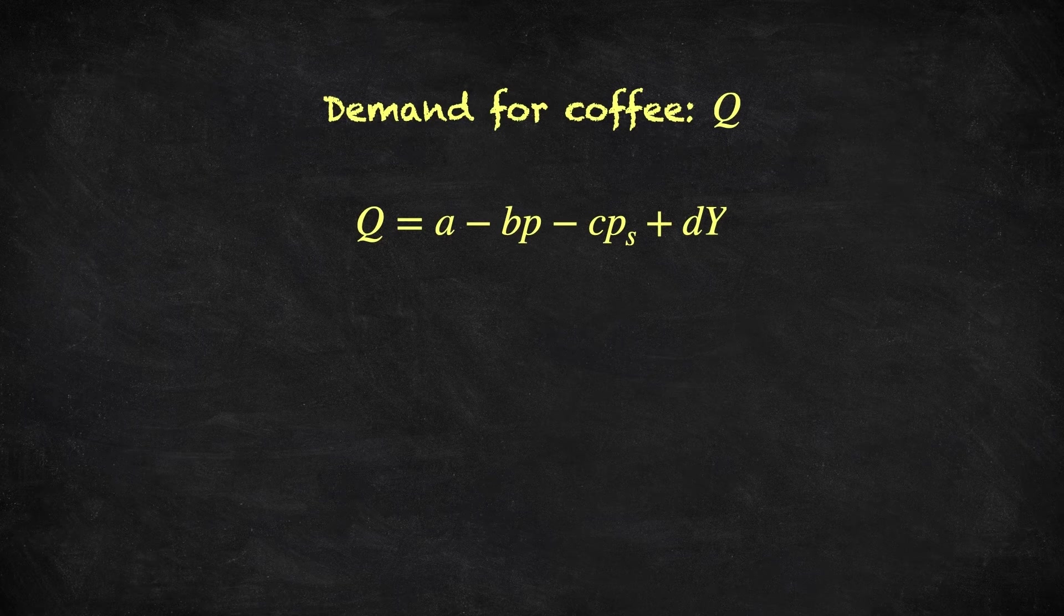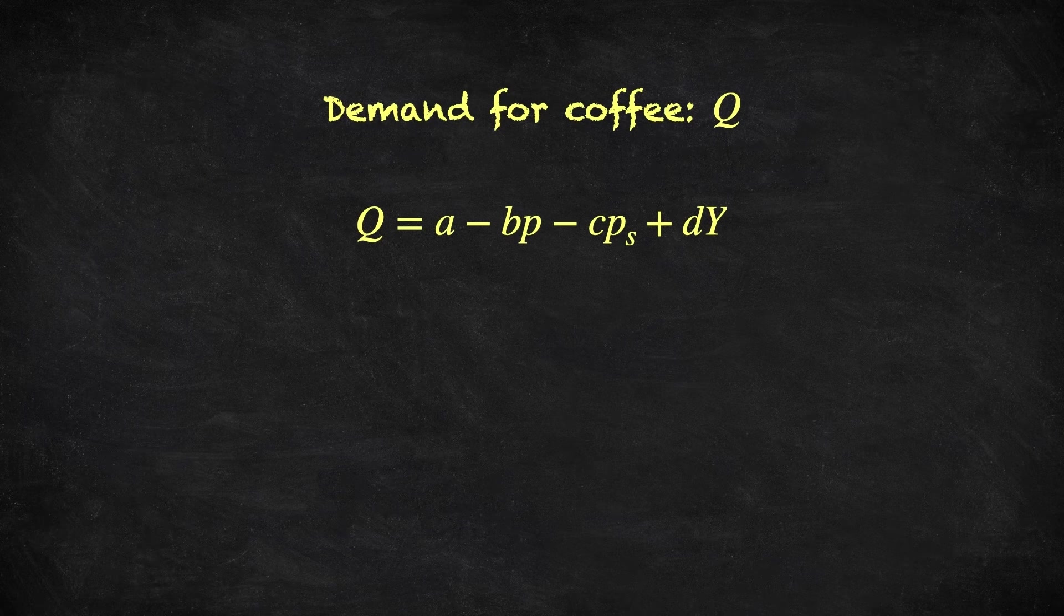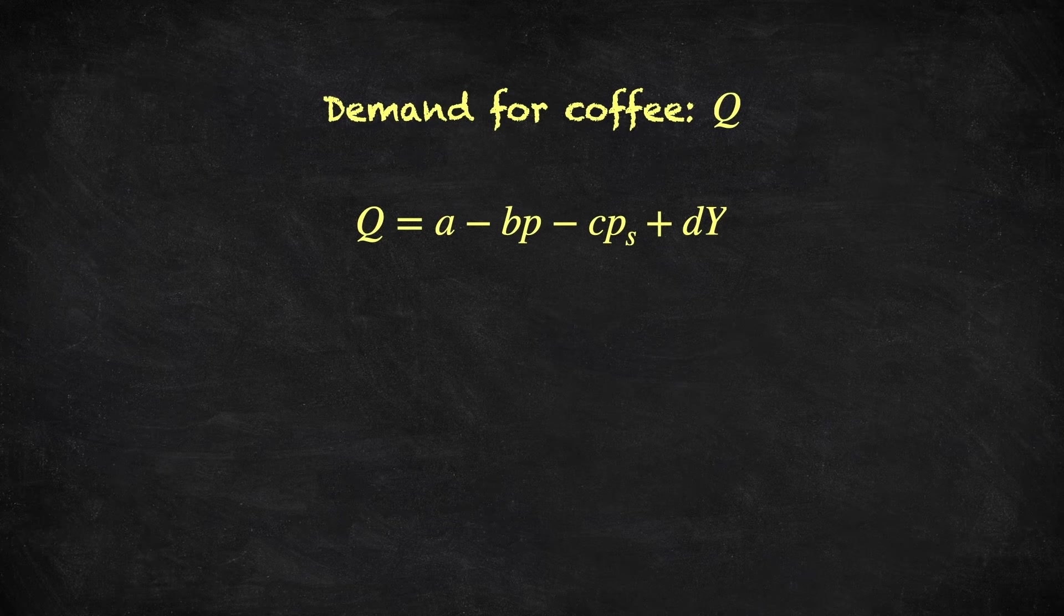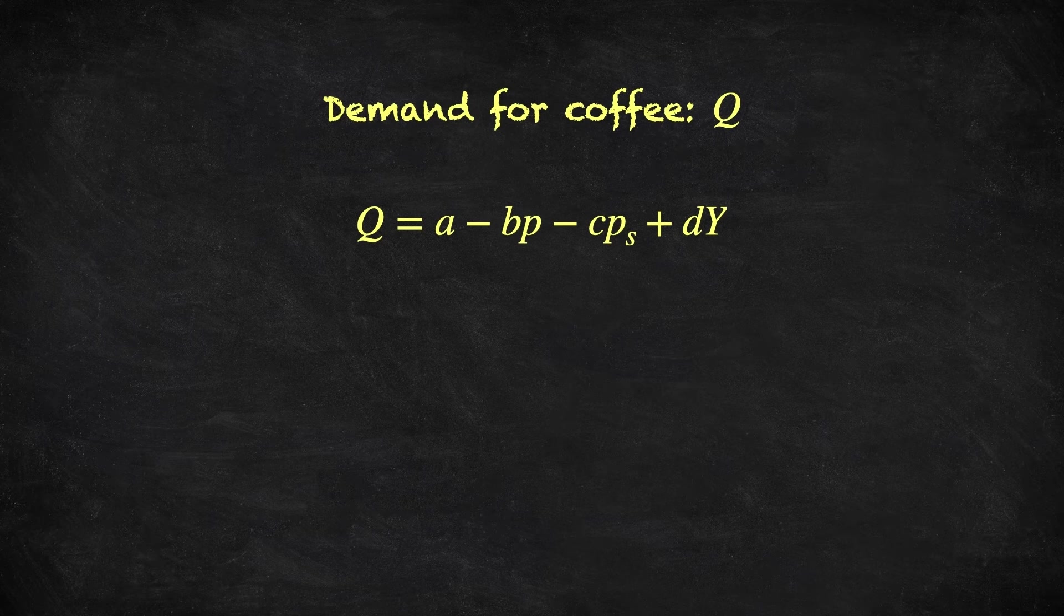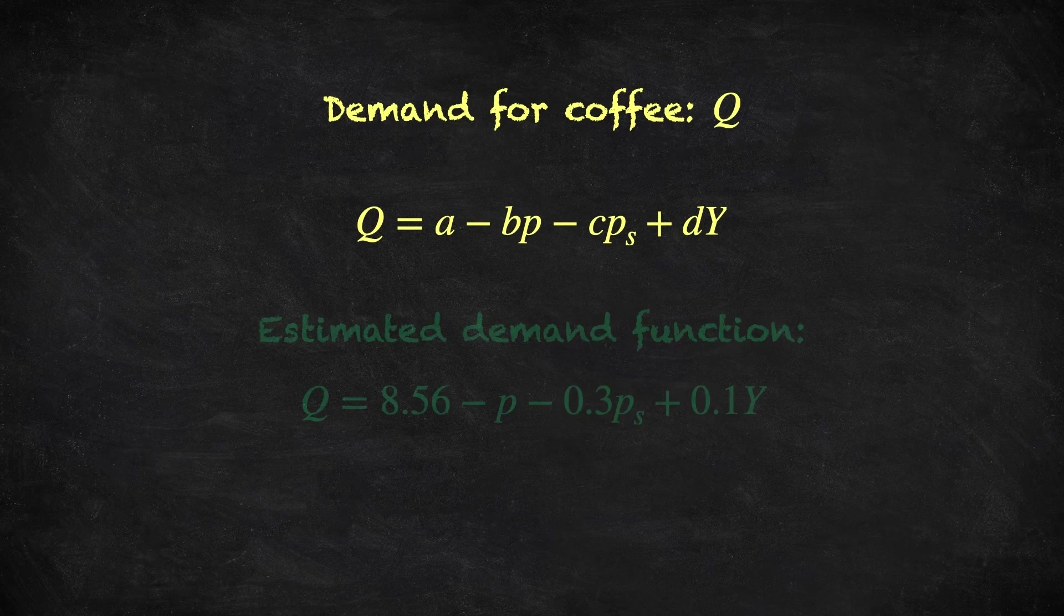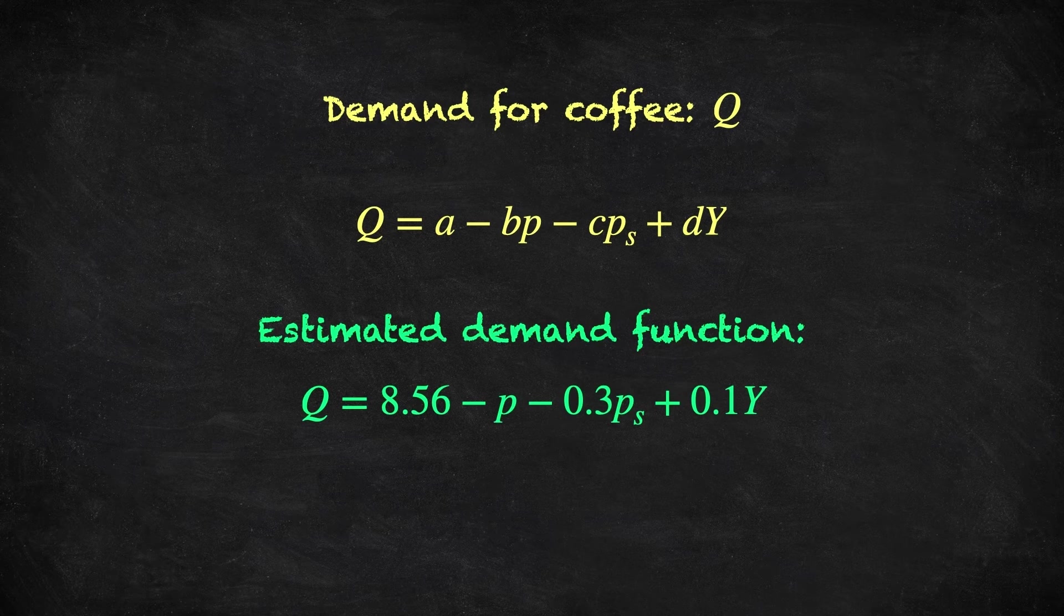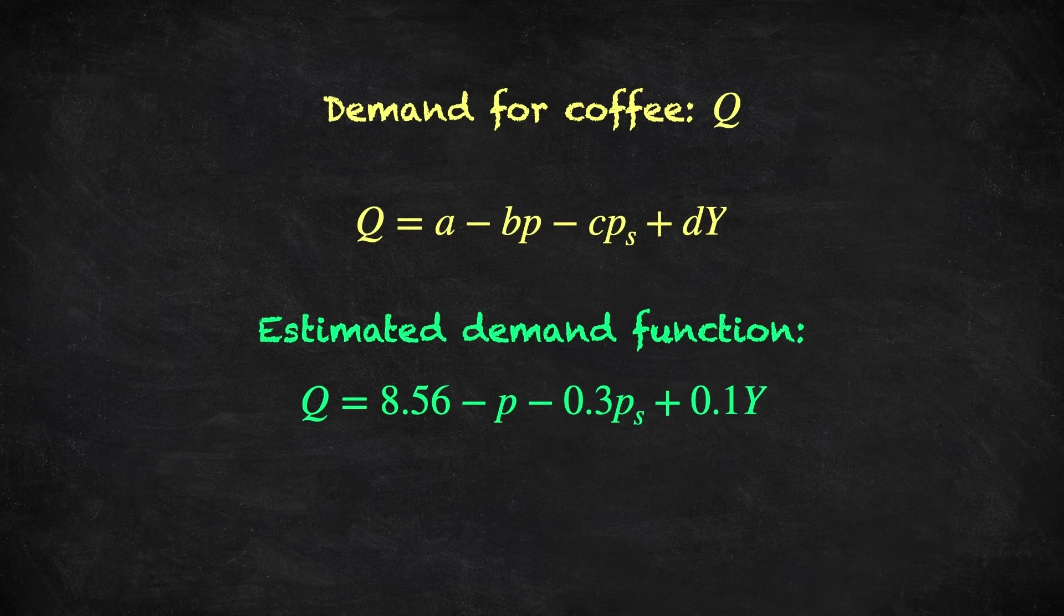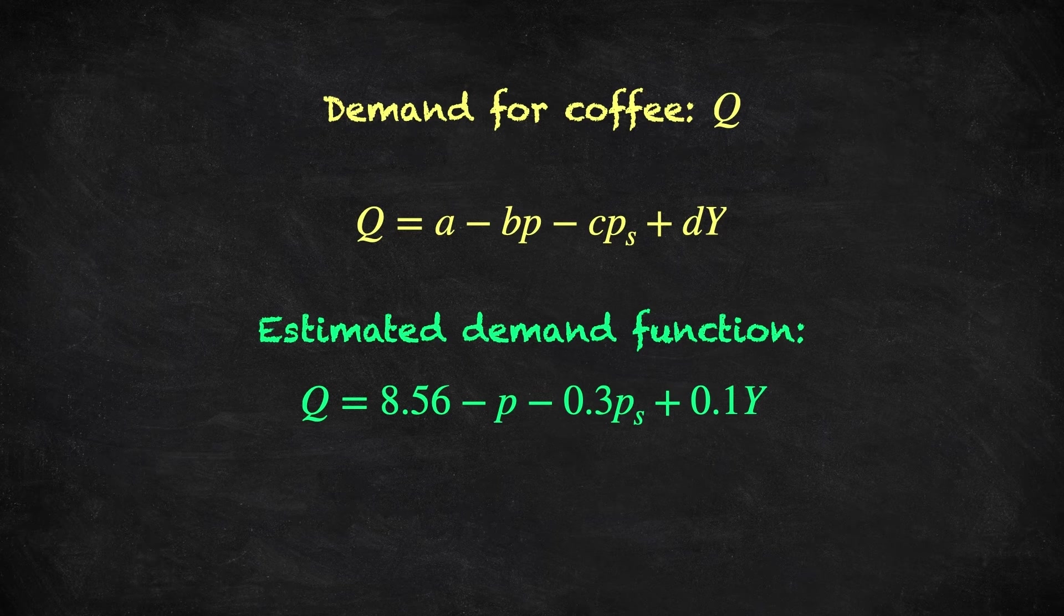So let's get back to our linear demand function. Now, if we use techniques from econometrics, we can estimate the values of these parameters, A, B, C and D, by using real-world data. And let's assume that we've been given these parameter values, and our best estimate is that the demand function is Q, the demand for coffee, is equal to 8.56 minus the price of coffee, minus 0.3 times the price of sugar, plus 0.1 times the consumer's income.